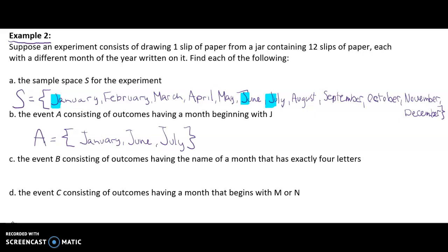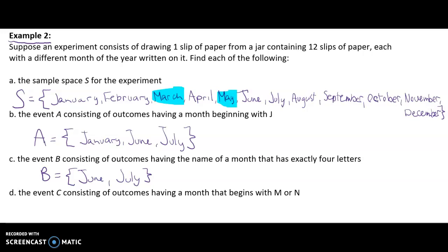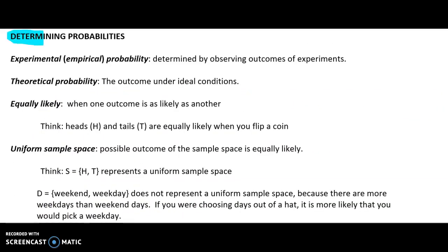For example C, the event B consisting of months with exactly four letters: June and July. So set B equals {June, July}. The last example, event C, consists of months beginning with M or N: March, May, and November. So set C equals {March, May, November} — remember those curly brackets.